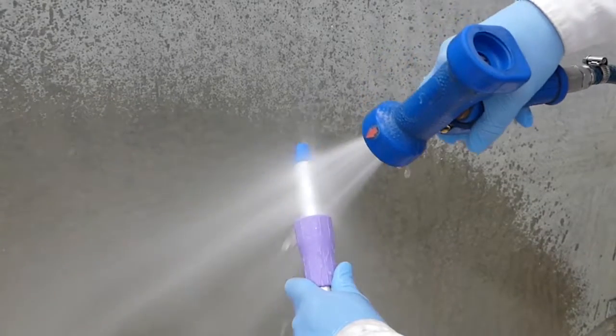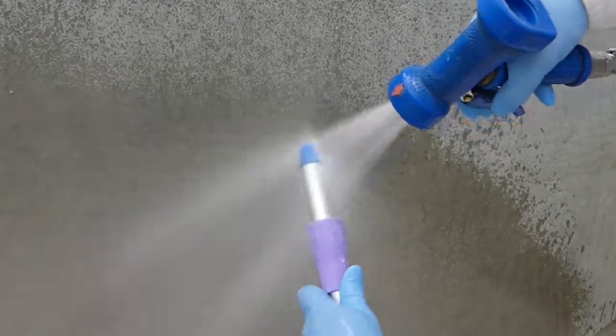For handles, clean them in the same way by hosing them down, but ensure that you slide the locking collar upwards and clean this area thoroughly.